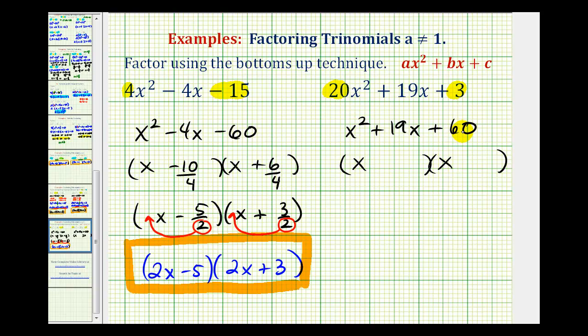Now we want the factors of sixty that add to nineteen. Well, that would be fifteen times four, since fifteen plus four equals nineteen. So we'll have x plus fifteen and x plus four.